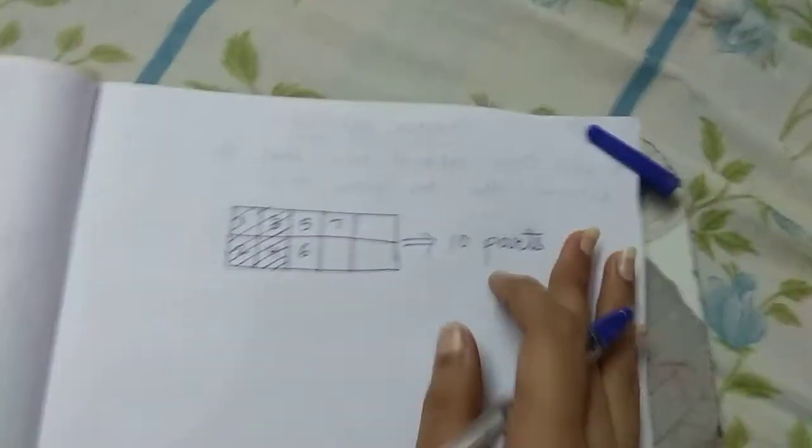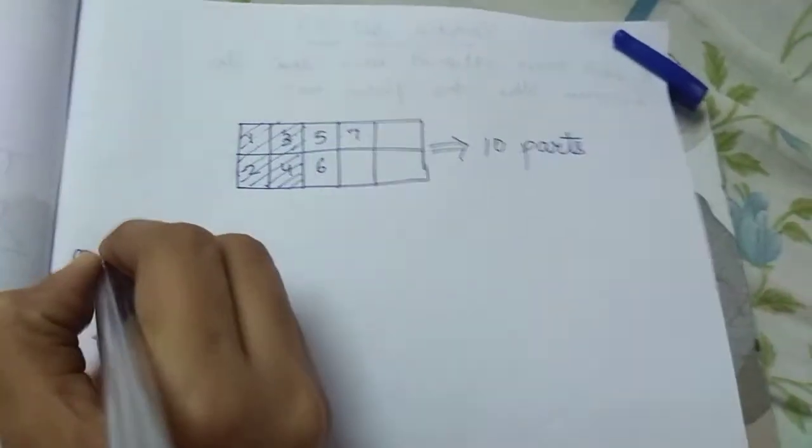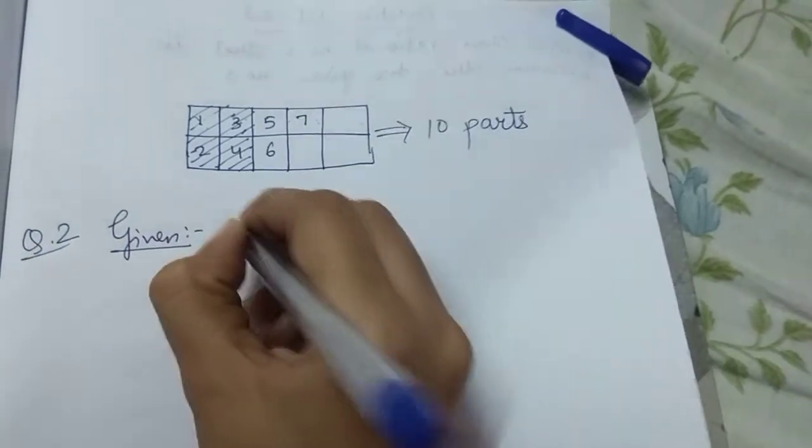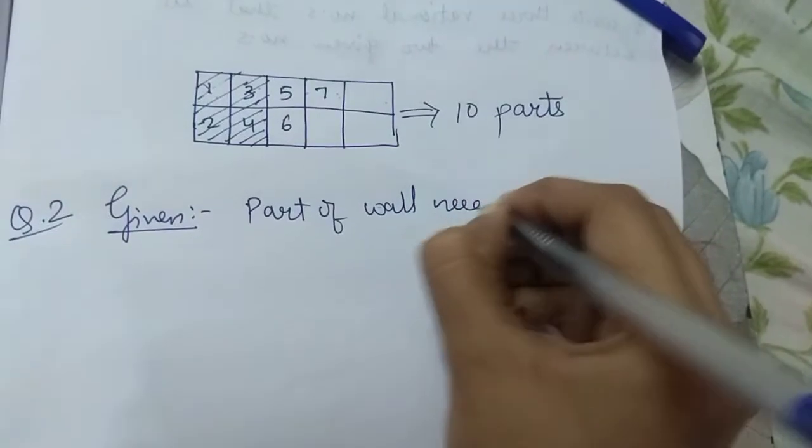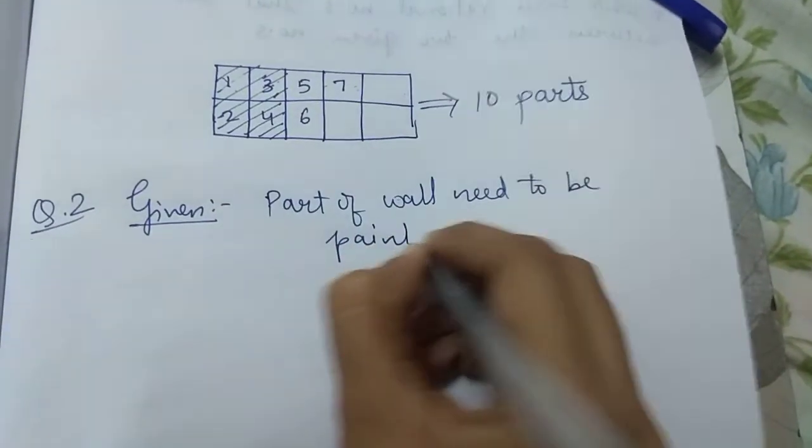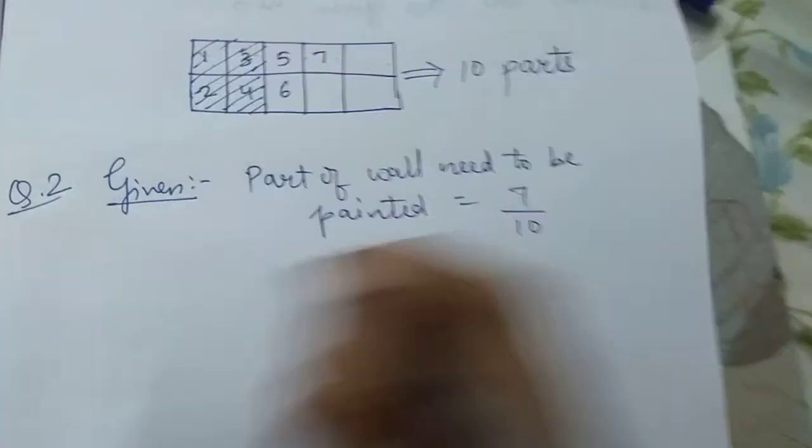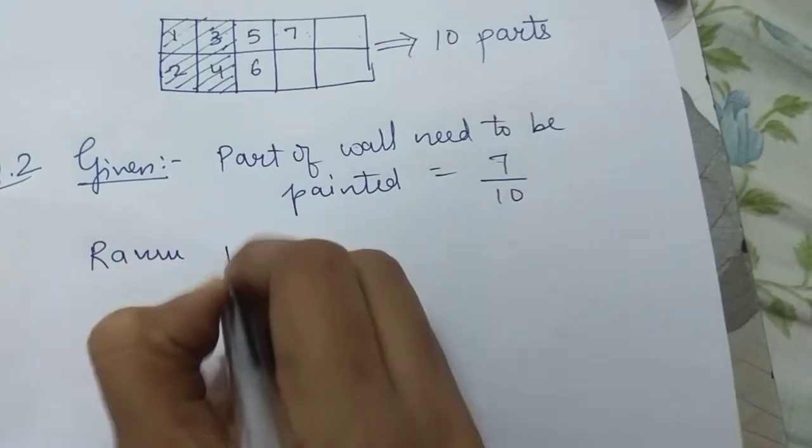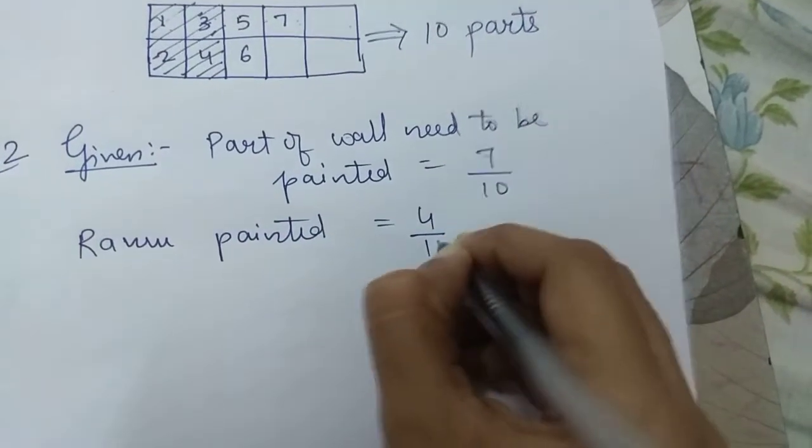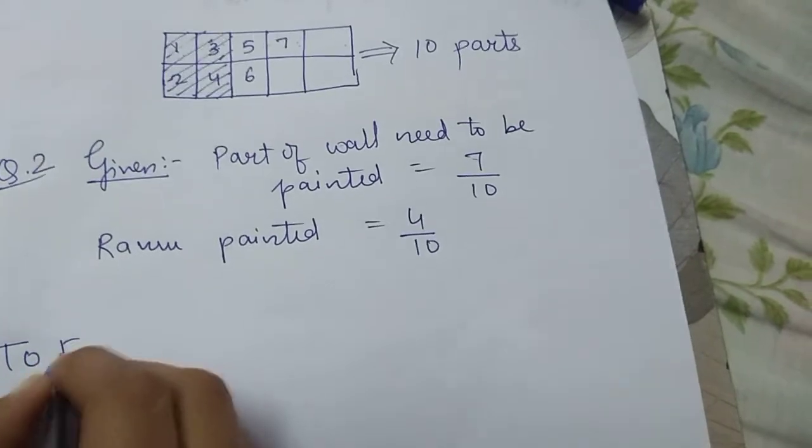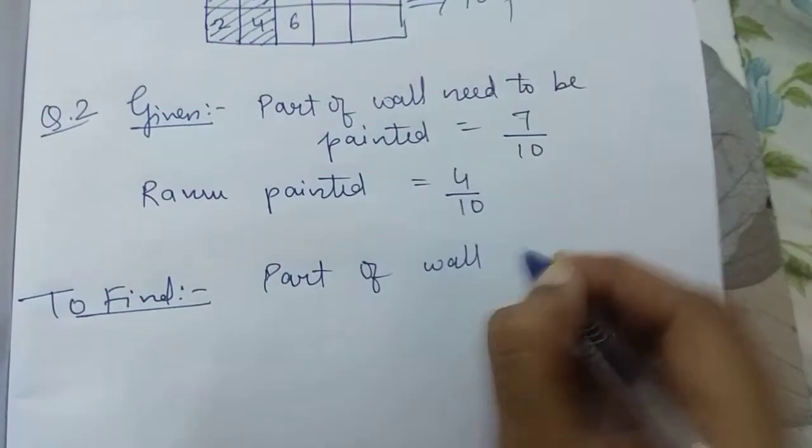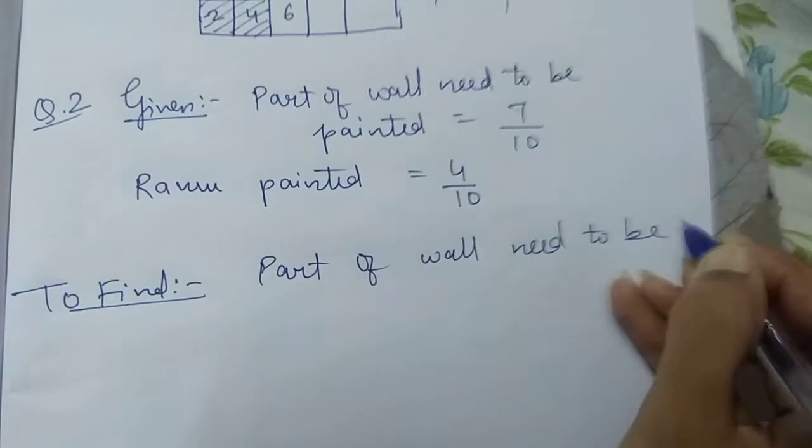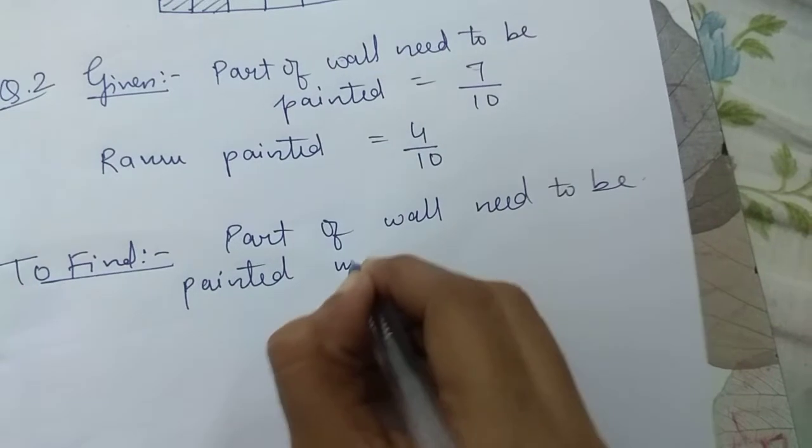How we are going to solve in a word problem form? Let's see. So, question number 2. Given: Part of wall need to be painted is 7 by 10. And Ramu painted how much? Ramu painted 4 by 10 parts. So to find, we will write, part of wall need to be painted more.